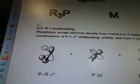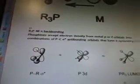R3PM, Pi Backbonding. Phosphines accept electron density from metal P or D orbitals into combinations of P, C, and whatever that means. Antibonding orbitals that have pi-symmetry.